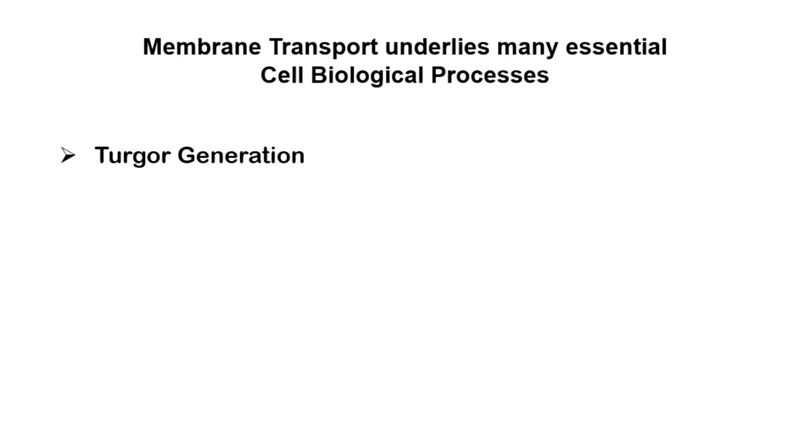Turgor generation is accomplished by accumulation of salts. In the mature cells of most plants, potassium ion accumulates in the cytoplasm and in large central vacuoles. Whereas in halophytes, the principal cation is usually the sodium ion. Cations must be balanced by a corresponding concentration of anions to achieve electroneutrality in the vacuole. Thus, the principal anion is usually chloride ion.